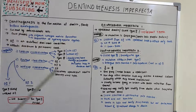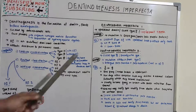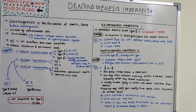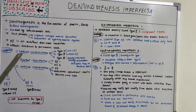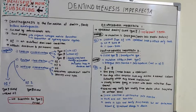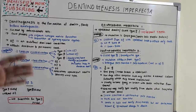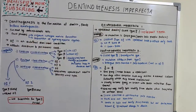Dentinogenesis imperfecta type 2 in the revised classification is Shields type 3, the Brandywine type. The mutation is different from the DSPP mutation seen in type 1. The key distinguishing feature is the presence of enlarged pulp chambers and pulp exposure, which are not present in type 1.